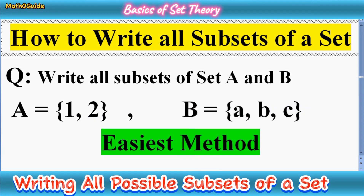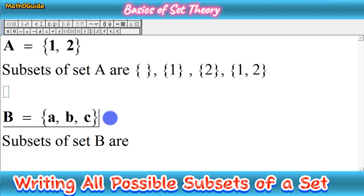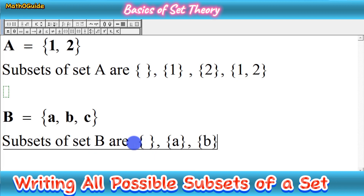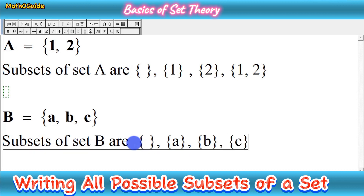Now we move to the second set, set B, which has three elements: A, B, and C. We write set B with elements A, B, and C, and we begin writing its subsets. The first subset is again the empty set, since it is a subset of every set. Then we write single-element subsets: {A}, {B}, and {C} — giving us three single-element subsets.